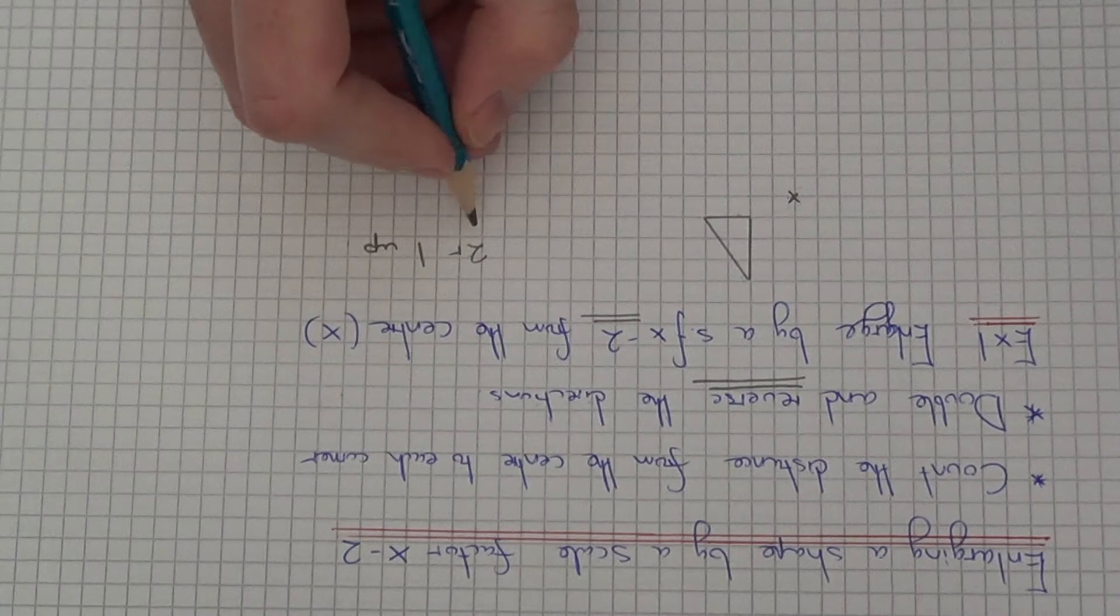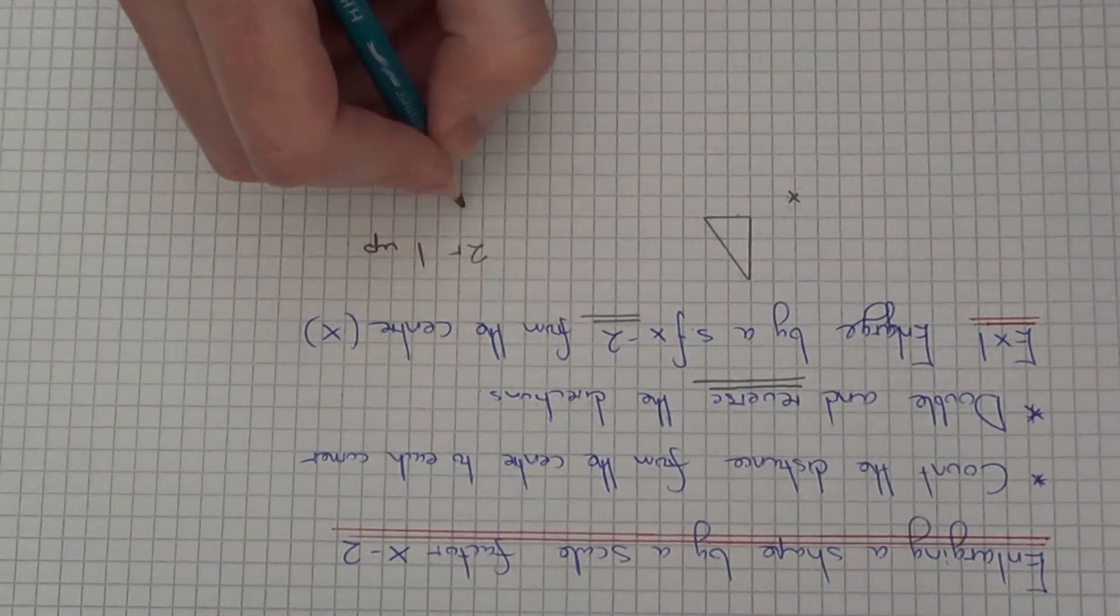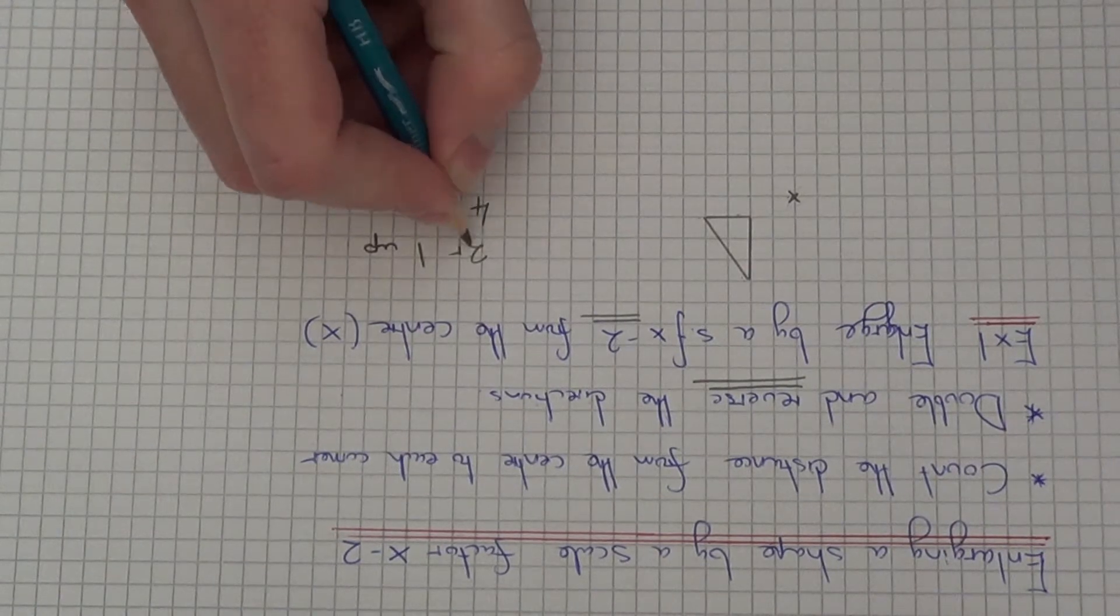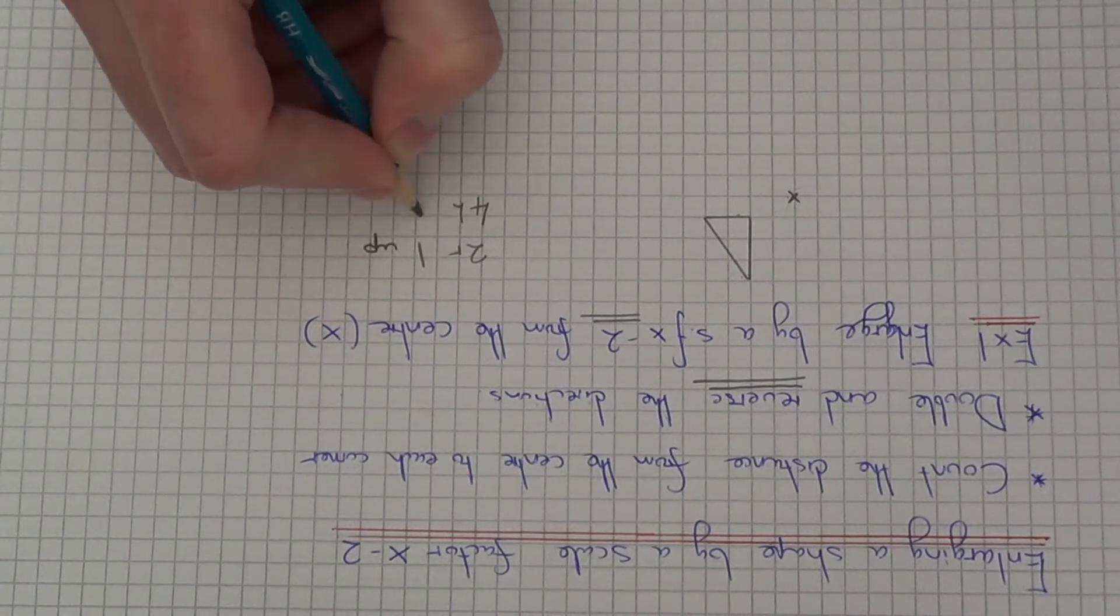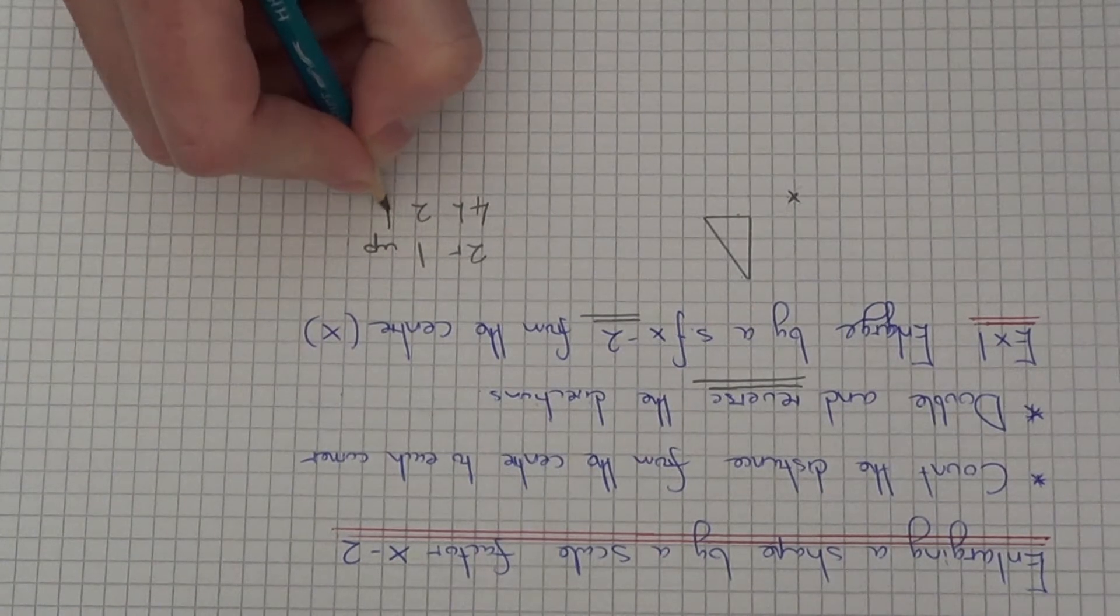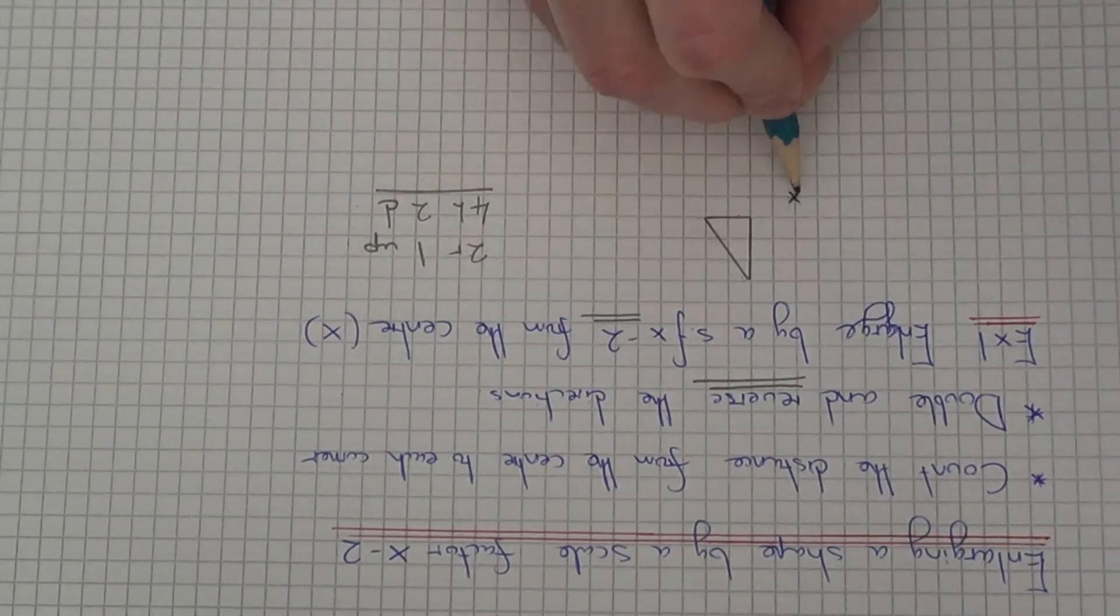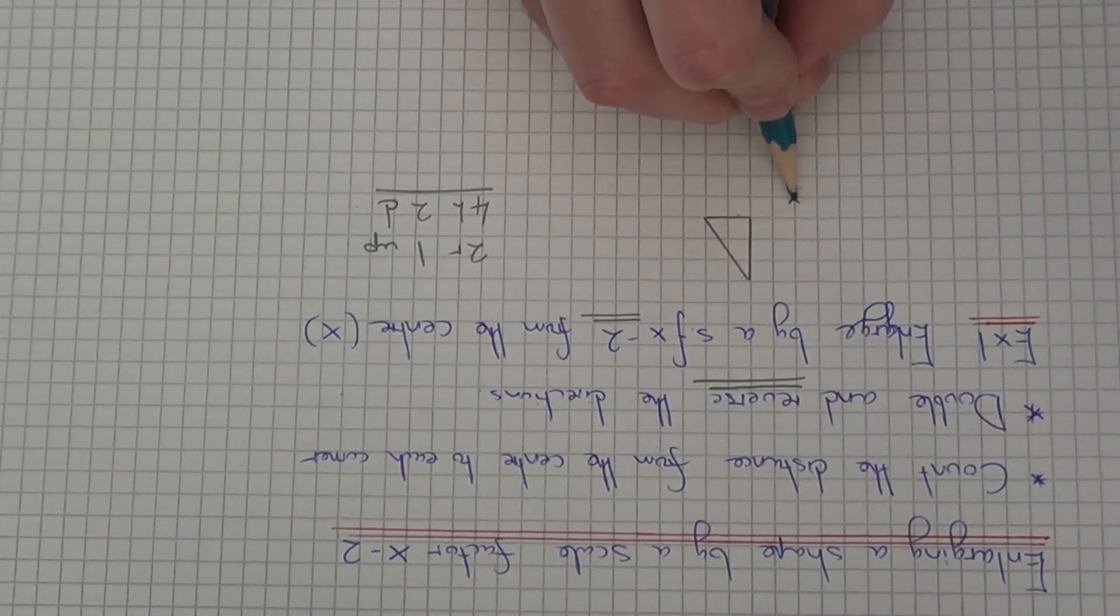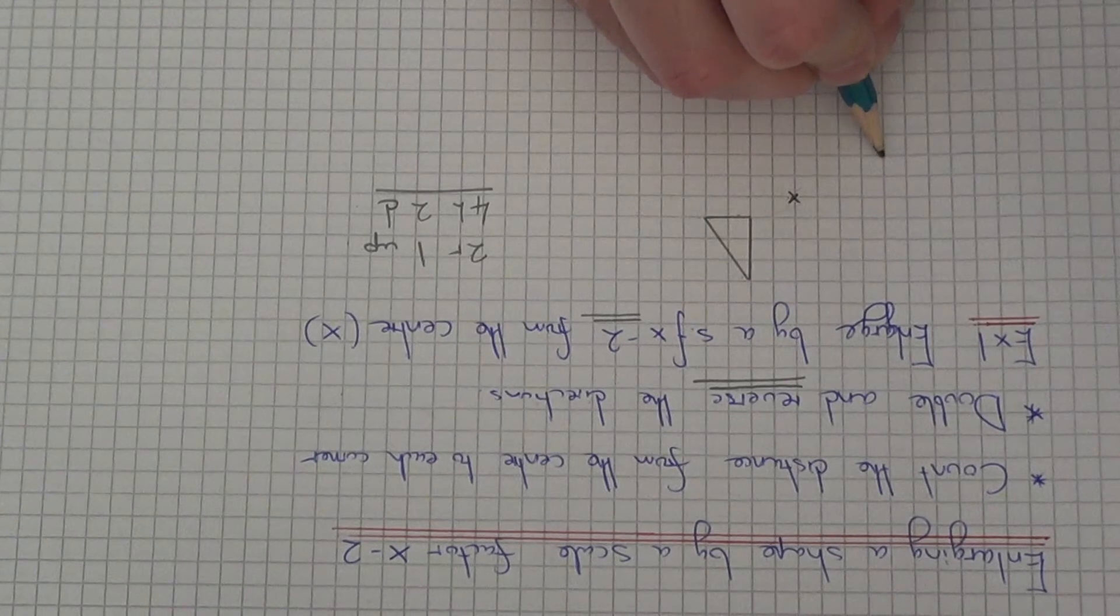And what you need to do now is double these distances because the scale factor is times minus 2 and also change the directions. So 2 right will become 4 left and 1 up will become 2 down. So if we count this out now, so it will be 4 left and 2 down, so count it from the centre.